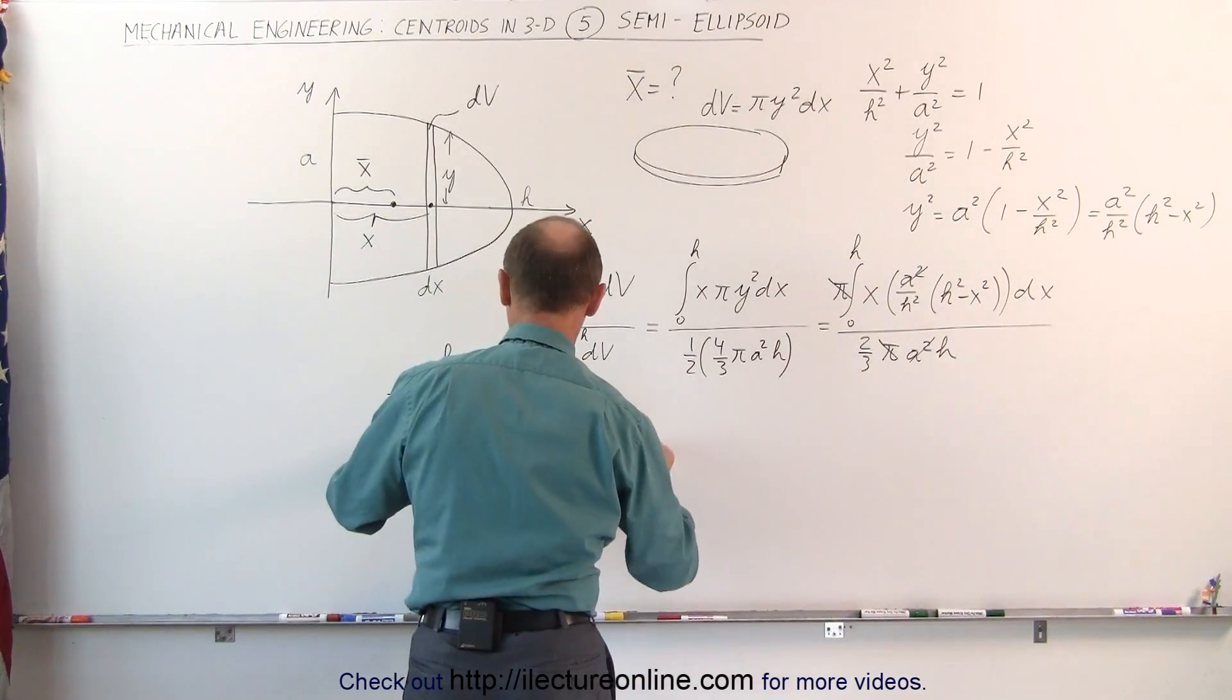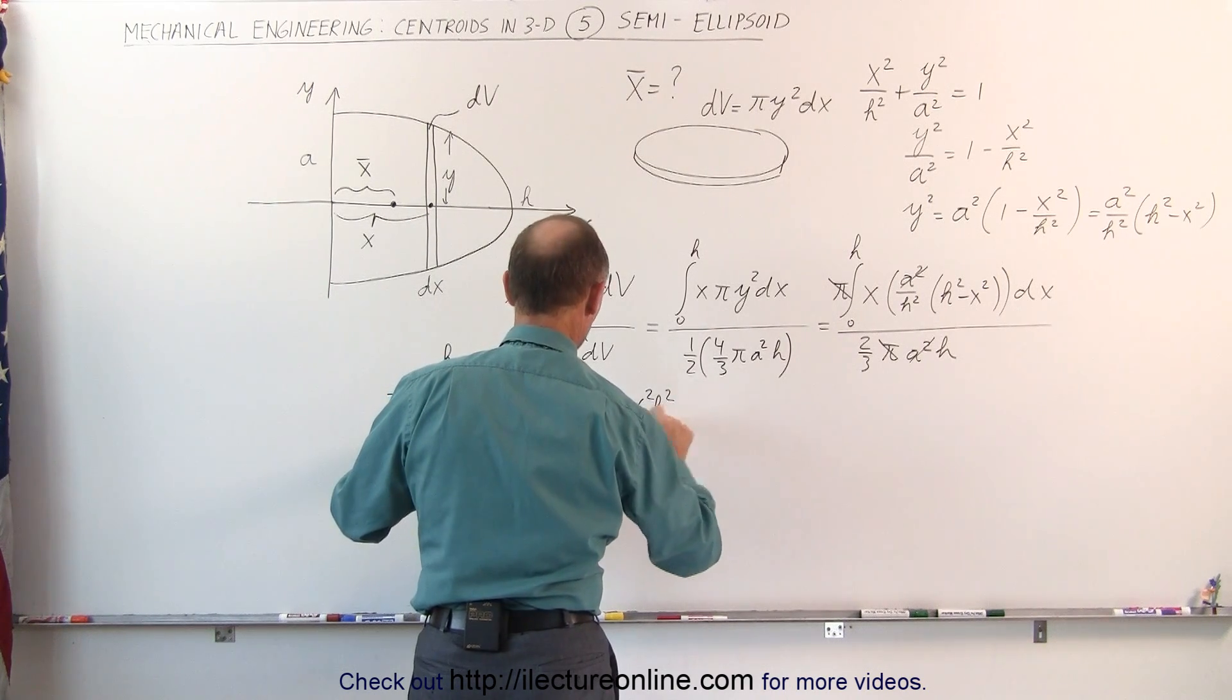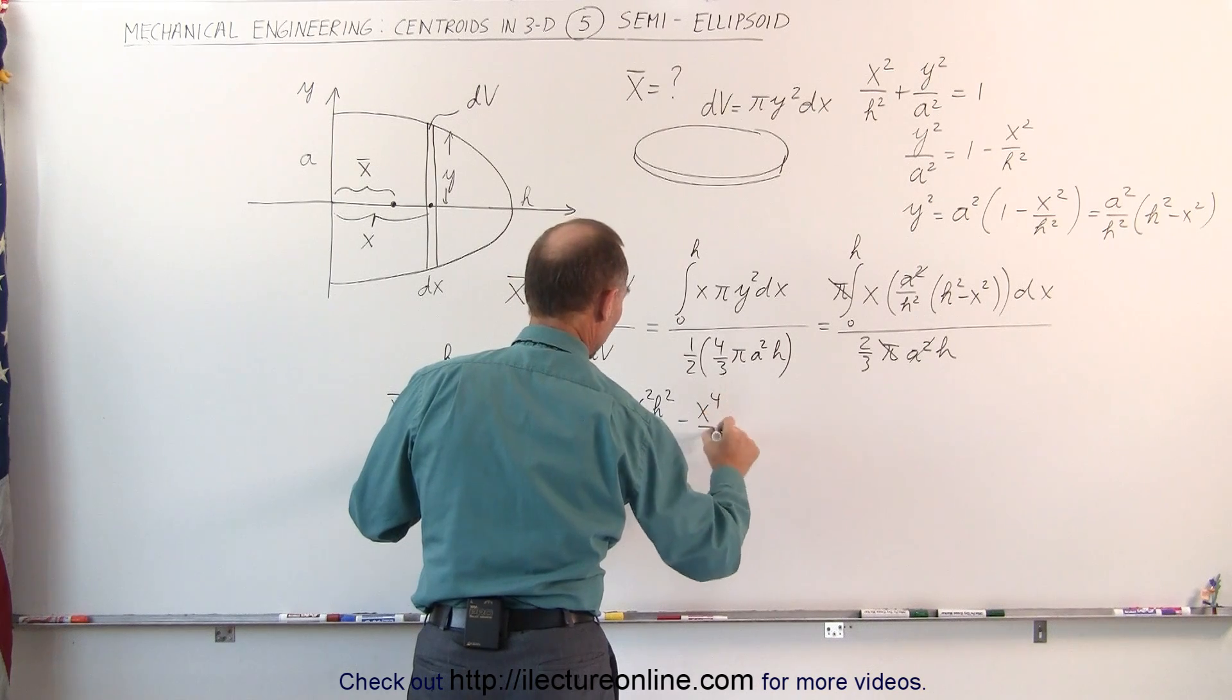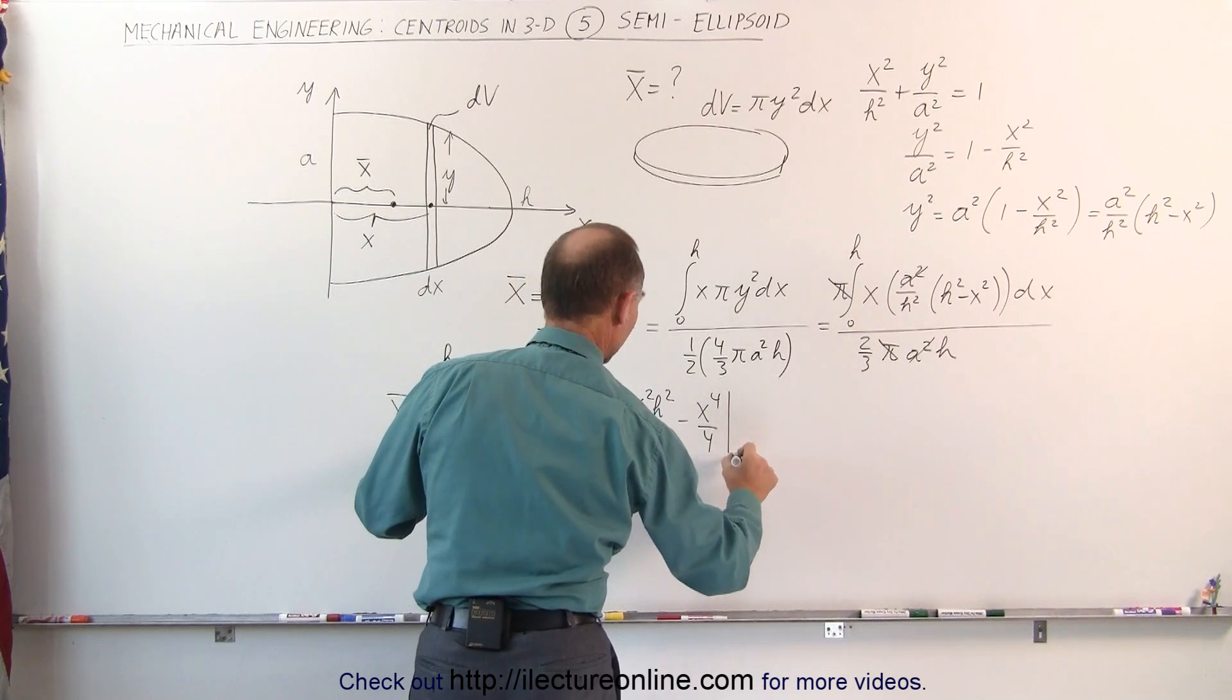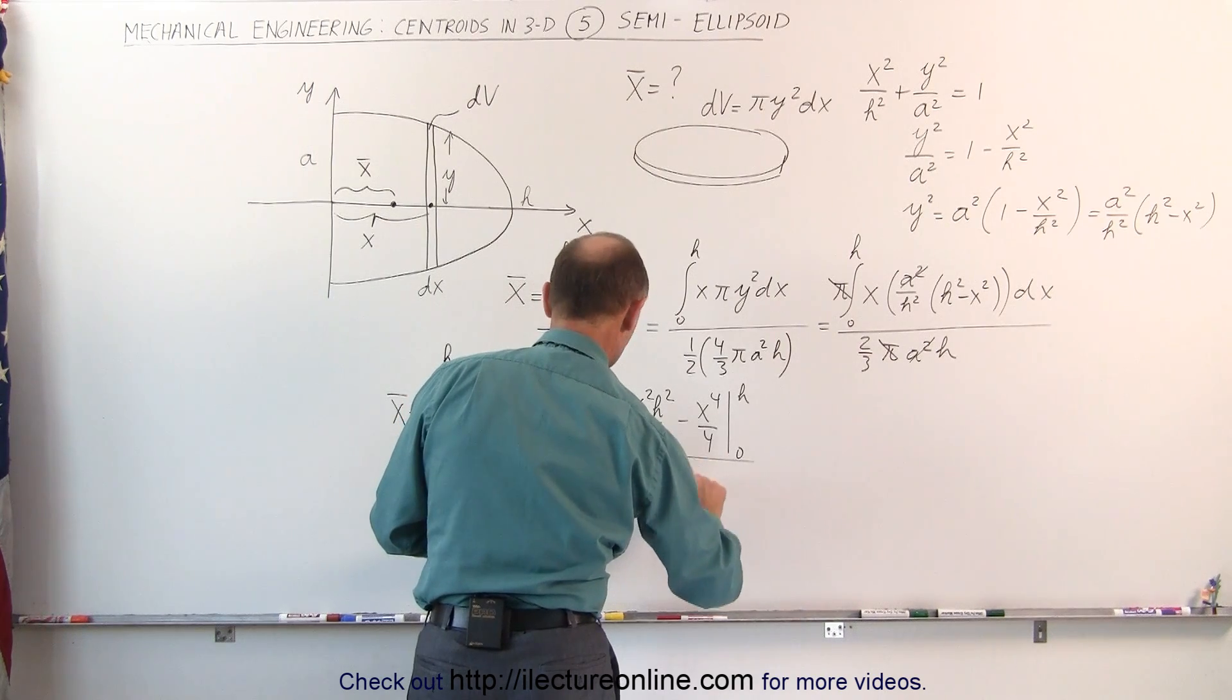The first becomes, that would be x²h²/2 - x⁴/4, evaluated from 0 to h in the denominator. We still have 2/3 h³.